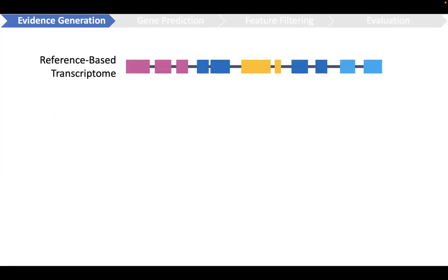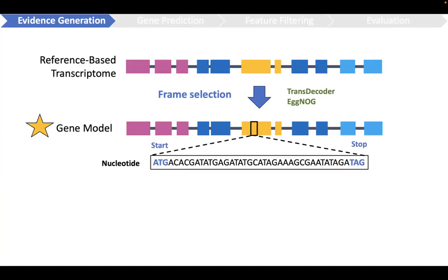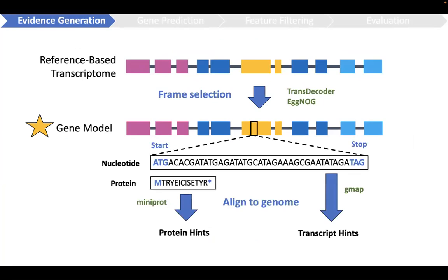The reference-based transcriptome is then frame-selected and filtered by EggNOG protein homology, leaving us with our final gene model. The nucleotide and protein sequences are also aligned to the genome to generate hints for gene prediction improvement.